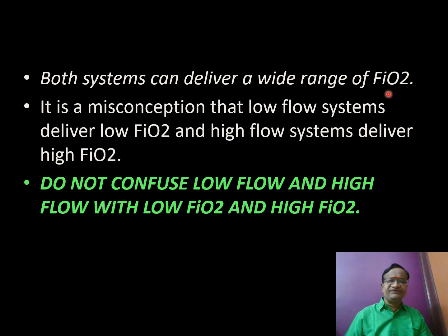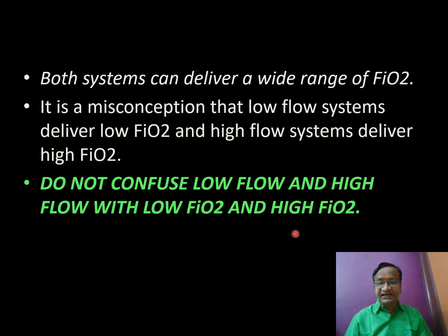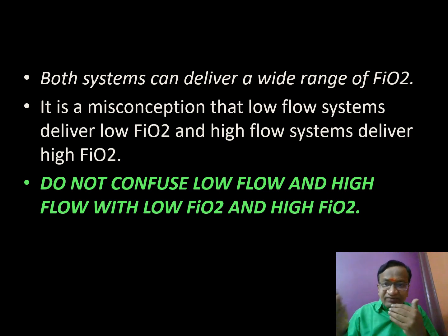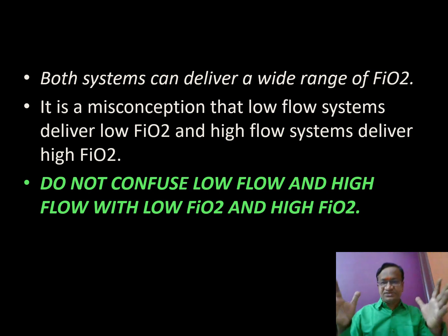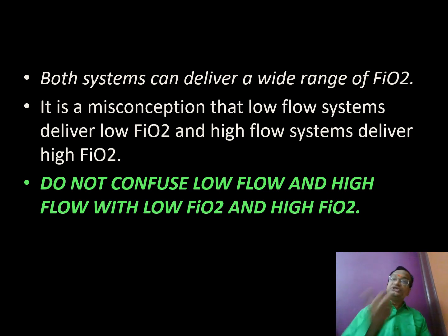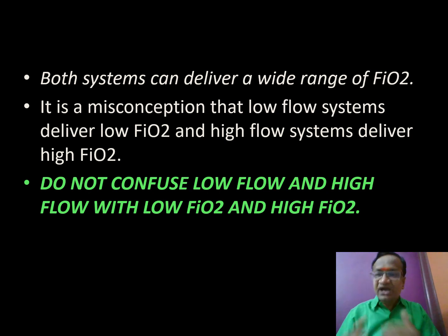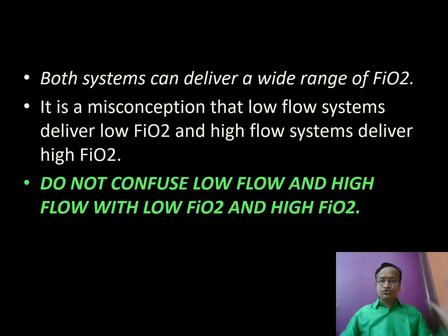Do not confuse low flow / high flow with low FIO2 / high FIO2. Both types can deliver a wide range of FIO2. A variable performance nasal cannula at 10 L/min can attempt to give ~35%, while a fixed performance Venturi can also be set to give only 26-28%. A Hudson mask — variable performance — can give 40%. Performance type and FIO2 are independent concepts.